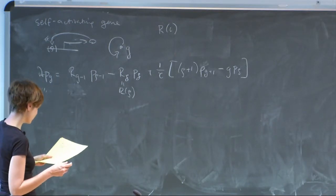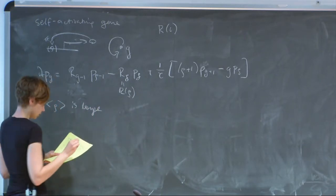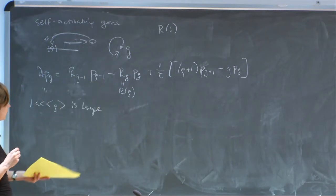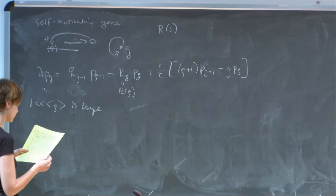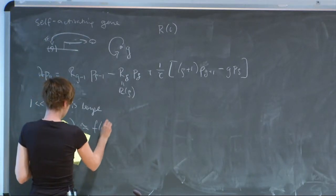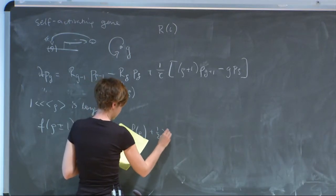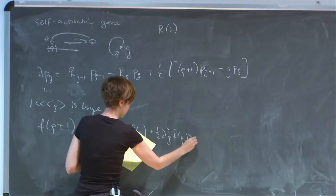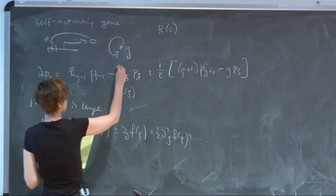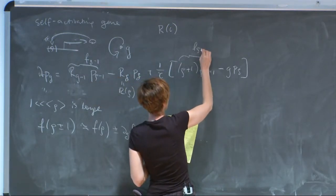We're going to look at the case where the mean number of proteins is large — specifically, larger than one — so that a change of one protein is not a big change. We're going to expand all functions around one, doing a Taylor expansion. So f(g−1) and f(g+1) appear.